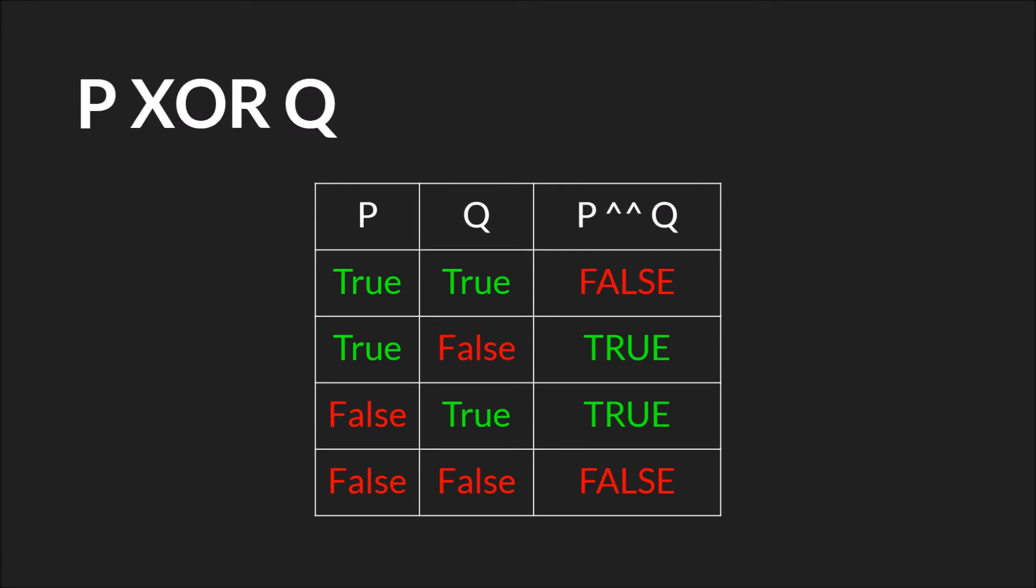Finally, we have the XOR. With the XOR, you're saying, is only one of them true? So if both P and Q are true, then P XOR Q is false, because we only want one of them to be true. But if either of them are true, then it'll evaluate to true. And of course, if both are false, it'll still be false.